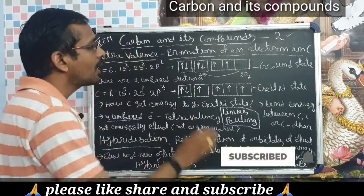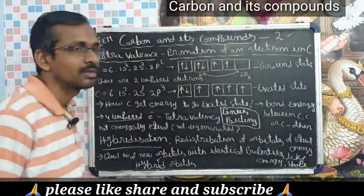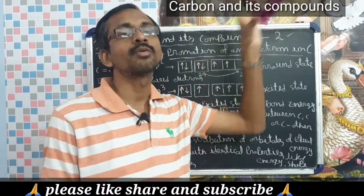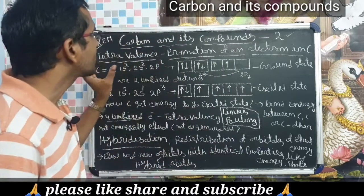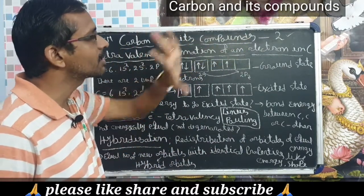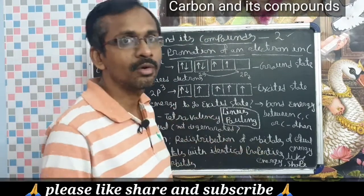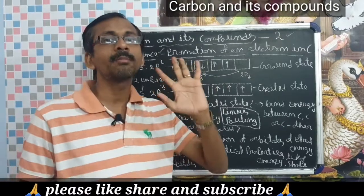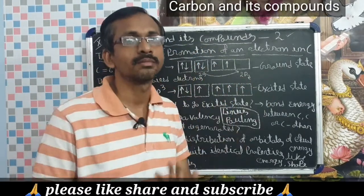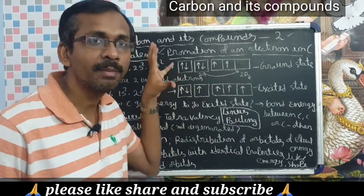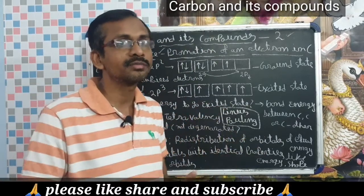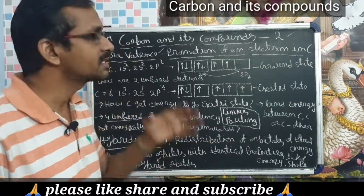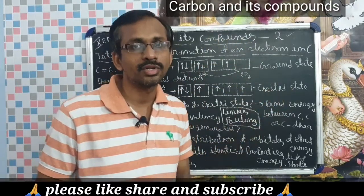Tetravalency of carbon — the carbon has a tetravalency. Because of the tetravalency, carbon forms many compounds and covalent bonds with other atoms. Tetravalency means the carbon contains four unpaired electrons in the outermost shell. Those four unpaired electrons form covalent bonds with other atoms or the same carbon atom, satisfying the octet rule and achieving a stable electronic configuration.